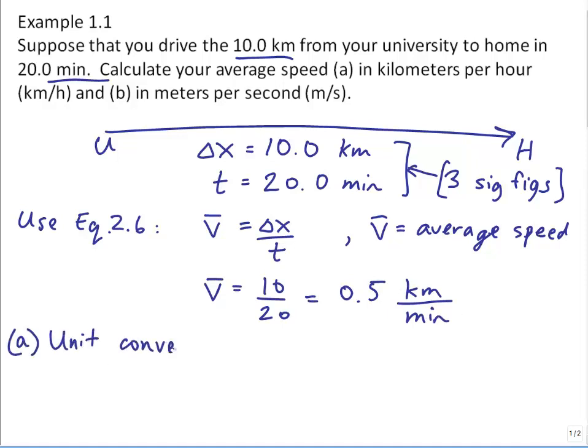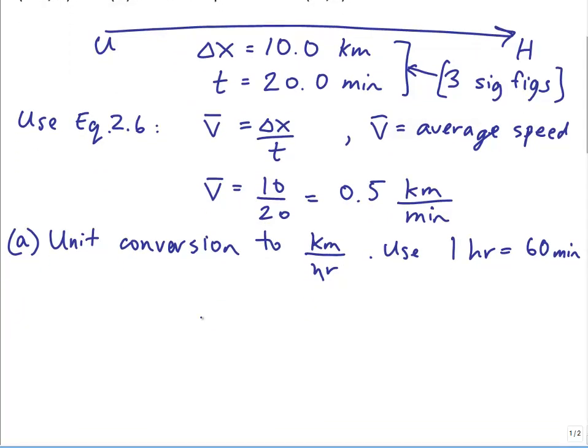Part A is a unit conversion to kilometers per hour. We'll use the fact that one hour equals 60 minutes. So I'll write v average equals 0.5 kilometers per minute. And now I'm opening a bracket, and I want to write a conversion factor equal to 1, which has